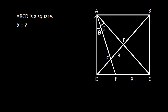In this video, we have been given that ABCD is a square and angle DAE is theta, angle CAP is theta, and EF is 3, CP is X. We have to find X.